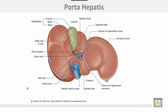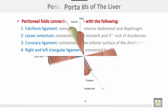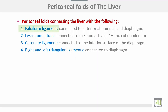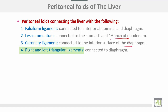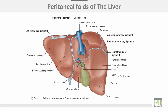Here is the porta hepatis showing its contents: the bile duct, hepatic artery, and portal vein. The peritoneal folds include: the falciform ligament, connected to the anterior abdominal wall and diaphragm; the lesser omentum, connected to the stomach and the first part of the duodenum; the coronary ligaments, connected to the inferior surface of the diaphragm; and the right and left triangular ligaments, also connected to the diaphragm. The bare area of the liver lies between the anterior and posterior layers of the coronary ligaments.